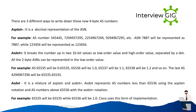ASDOT+ breaks the number up into two 16-bit values — a low-order value and a high-order value — separated by a dot. All two-byte ASNs can be represented in the low-order value. For example, 65,535 will be 0.65535, 65,536 will be 1.0, 65,537 will be 1.1, 65,538 will be 1.2 and so on. The last AS 4,294,967,296 will be 65535.65535.